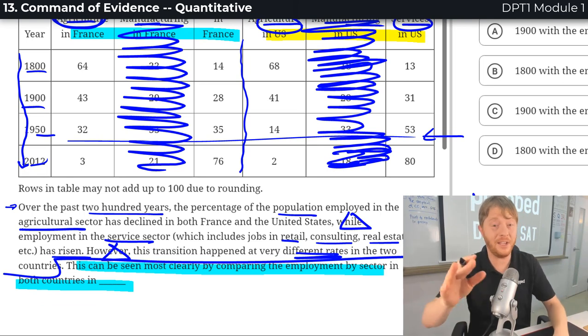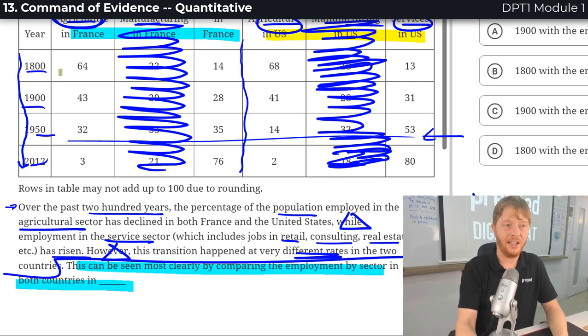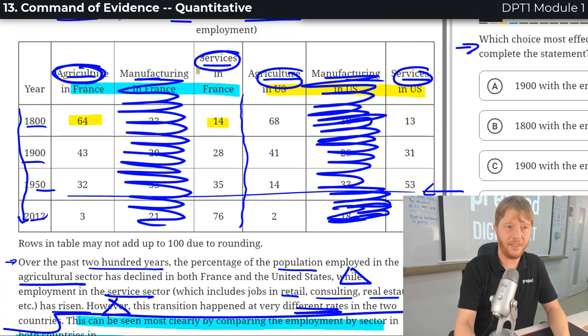Ah, now I'm seeing more of a difference too. It looks like in 1800, they both had this percentage of employment in the farming. So mostly farming and not so much services. That's true in the United States too. And then in agriculture in France in 1900 was still stronger than services. And that's true in the States.